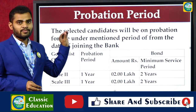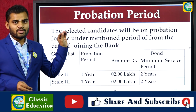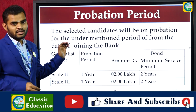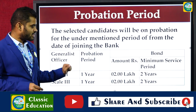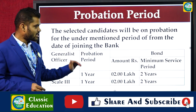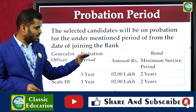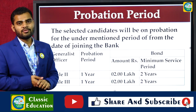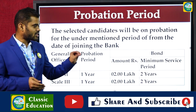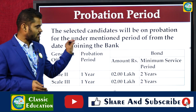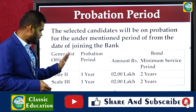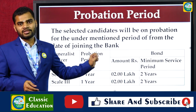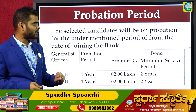The probation period for Scale-2 and Scale-3 officers will be 18 months. For Scale-2 and above and Scale-3, the minimum service period will be guaranteed. There will be three years of probation.